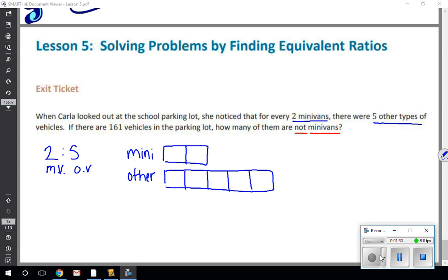So the 161 includes the part of two minivans and the part of five other vehicles. So there are seven parts total and those seven parts total is 161 vehicles.